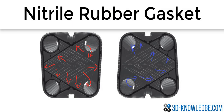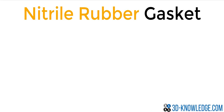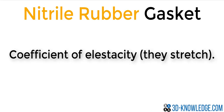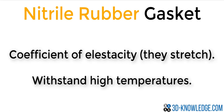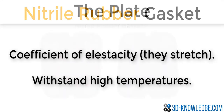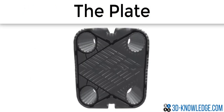The gaskets forming the seal are manufactured from nitrile rubber. They have a very good coefficient of elasticity, meaning they can be heated up and cooled down without breaking — which is very useful in a heat exchanger. They can also withstand temperatures up to 100 degrees, making them suitable for a wide range of industrial applications.